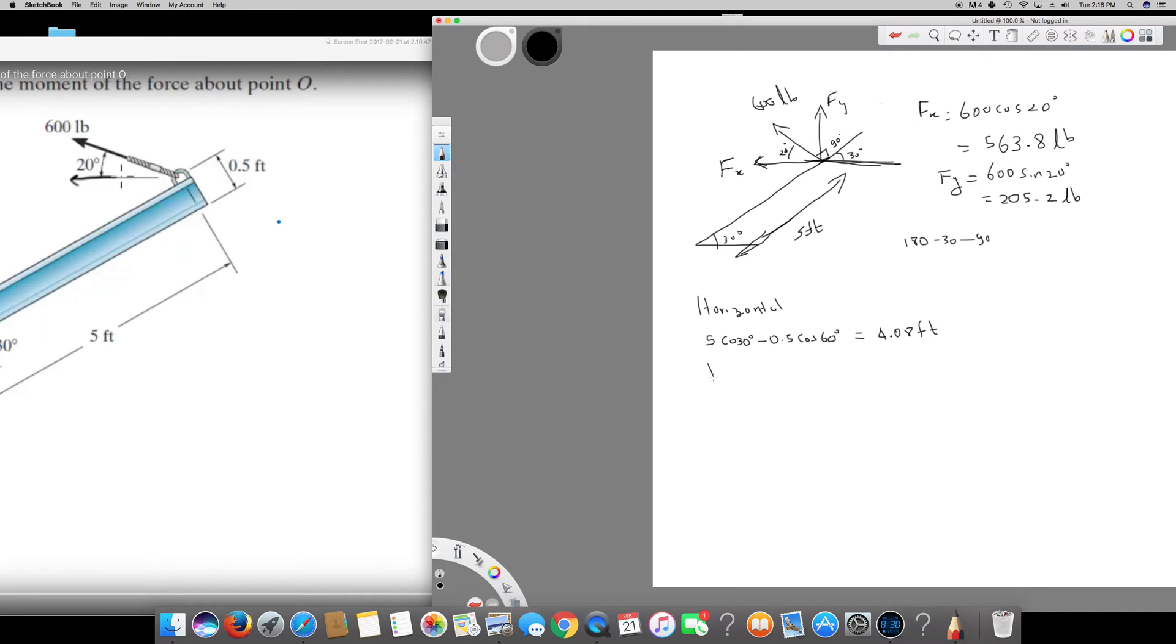And then I had to find the vertical distance. It's going to be same thing but here we have to use sine. This is going to be 5 sine 30 plus—because when I find the components of this 60 degree it will turn upward so this is going to be plus—and 0.5 sine 60. It will comes out to be 2.93 feet.